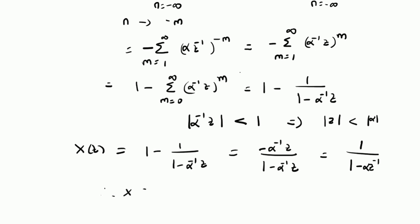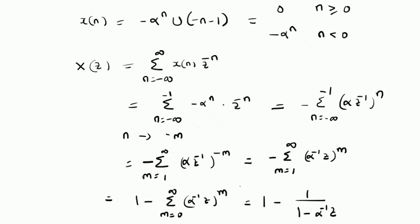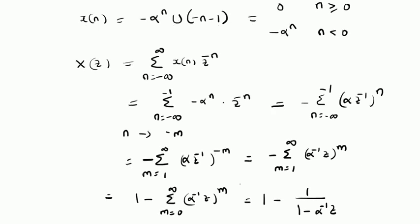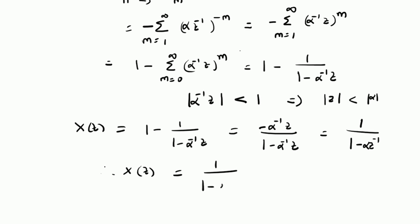Therefore, the Z-transform of the anti-causal signal -α^n · u[-n-1] is given by 1 / (1 - αZ⁻¹), with the ROC being |Z| < |α| — that is, the region inside the circle of radius |α|.